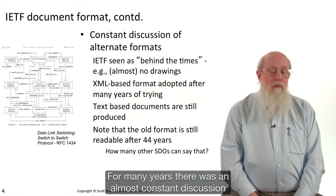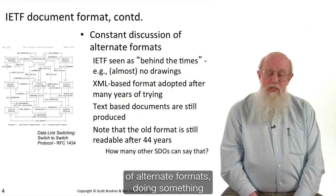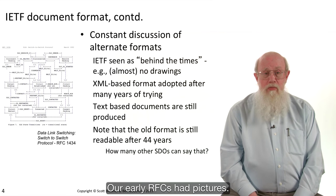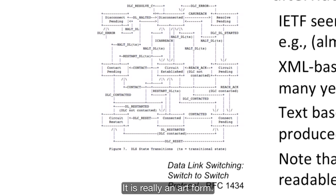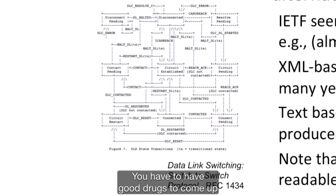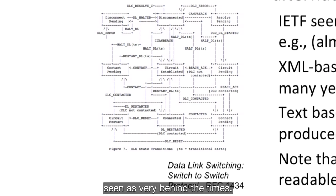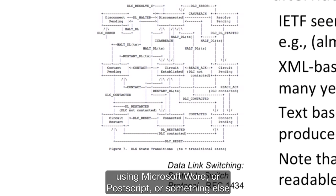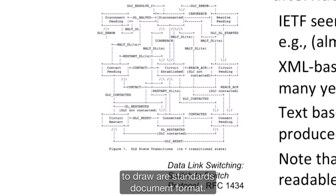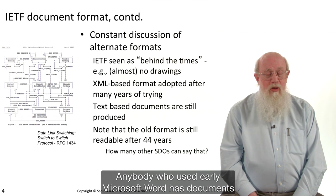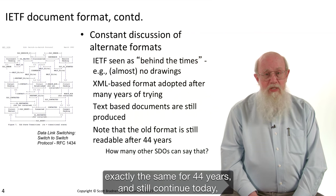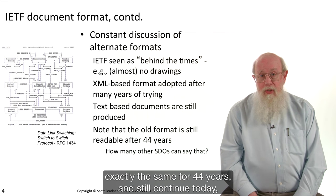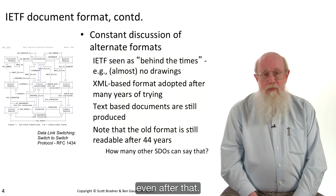For many years there was an almost constant discussion of alternate formats — doing something where you could draw a picture, for example. The early RFCs had pictures. There's an example here — that's RFC 1434. This is what is called ASCII art. It is really an art form; it's really hard to do. We were derided because we weren't using Microsoft Word or PostScript to draw our standards. But it turns out all of those formats have changed over time. Anybody who used early Microsoft Word has documents they can no longer read. But the old-format RFCs have been exactly the same for 44 years and still continue today.